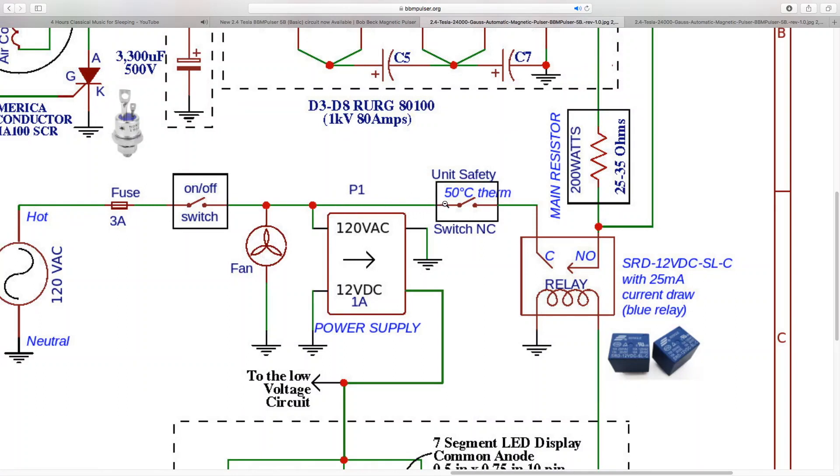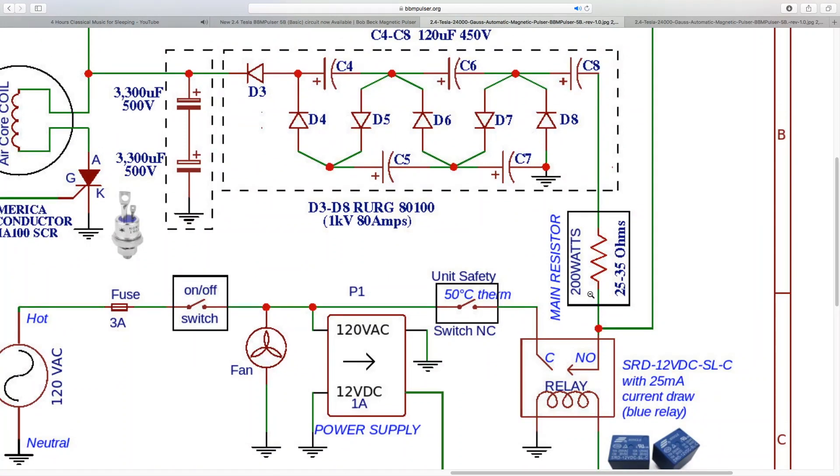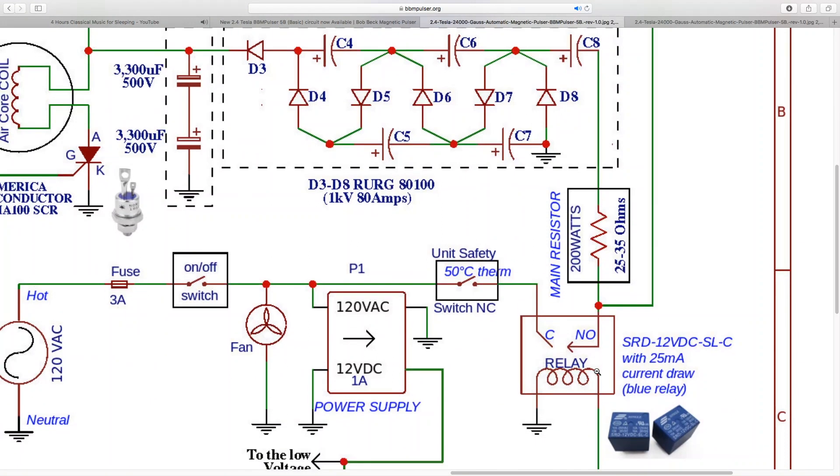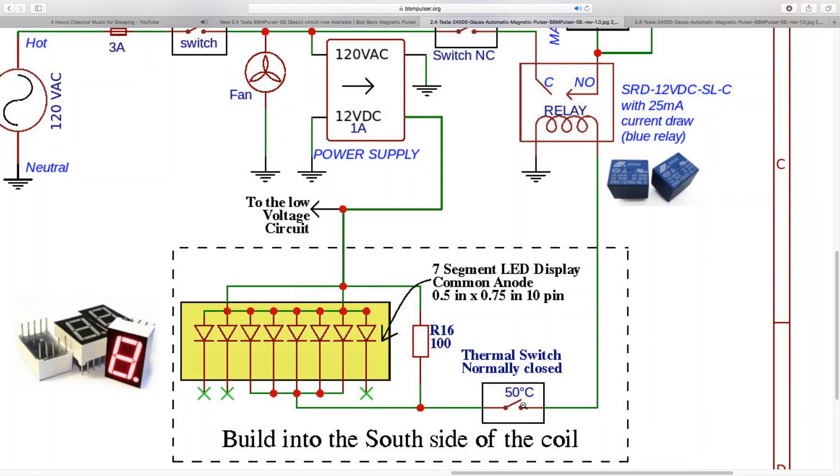After that, power is going to go into the thermal switch. This thermal switch is normally closed and it's set to trigger at 50 Celsius. Anytime internal temperature raises over 60 Celsius, this thermal switch will trigger and cut all the power to the charging circuit here.